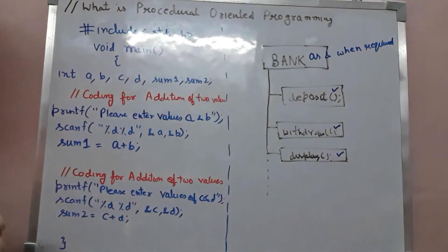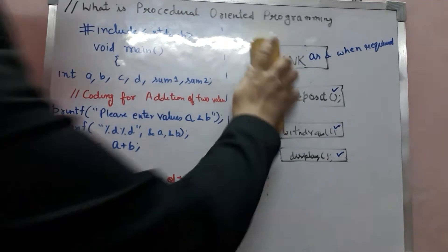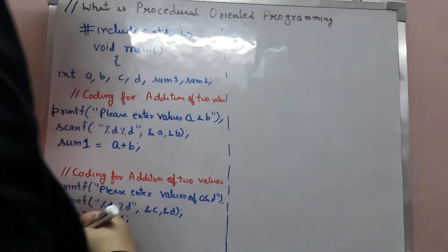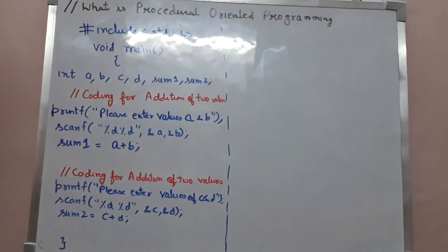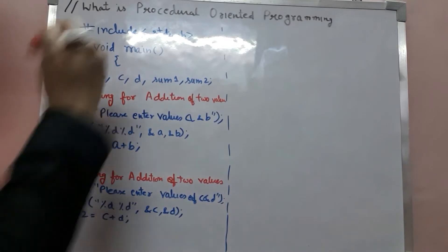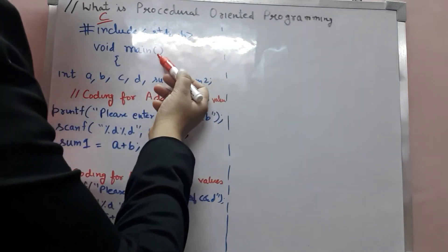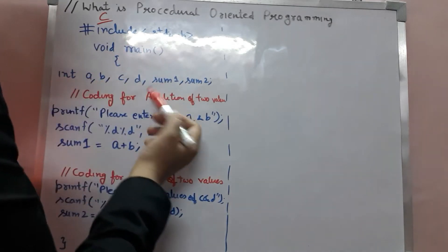So let's see how we can convert any program into different functions. This is a C program. Firstly, we are including our header file. Next, our main function. Next, variable declaration.